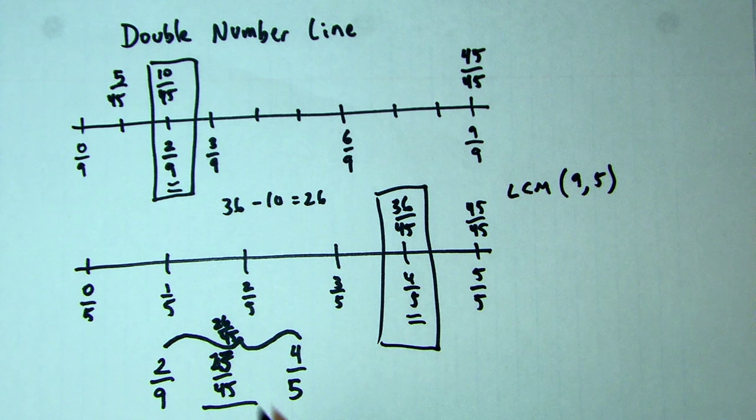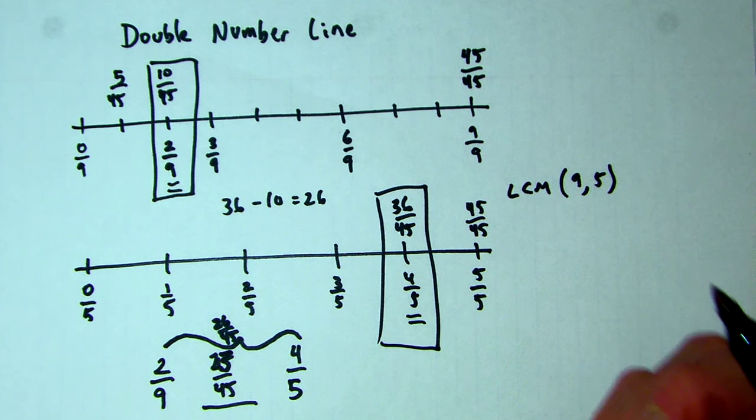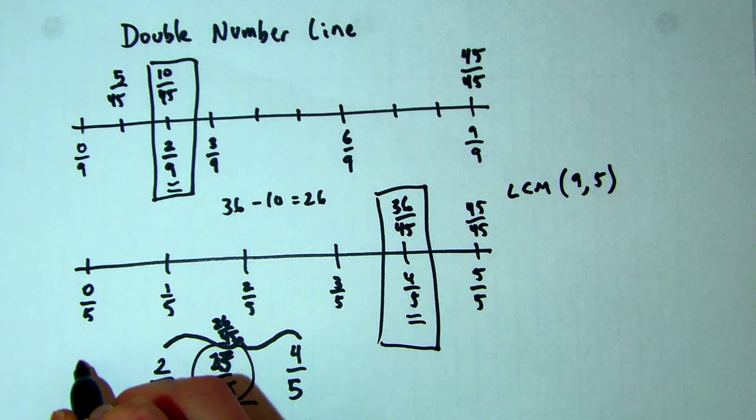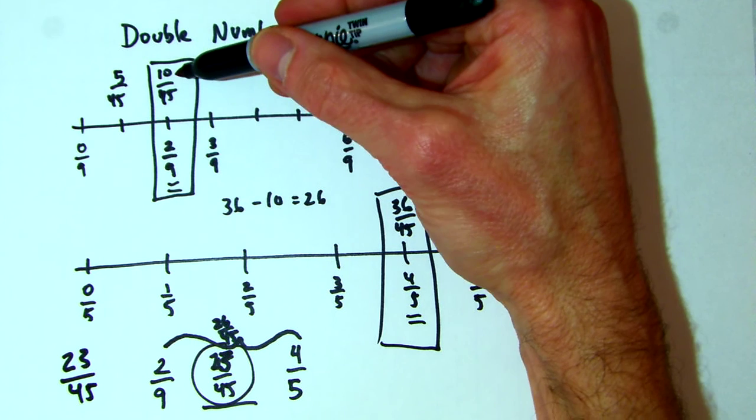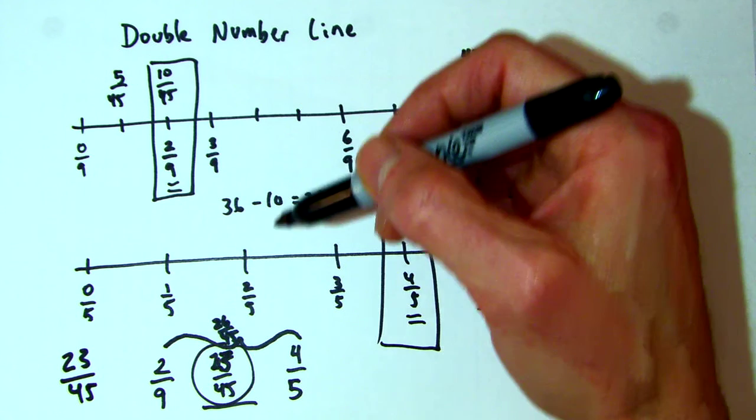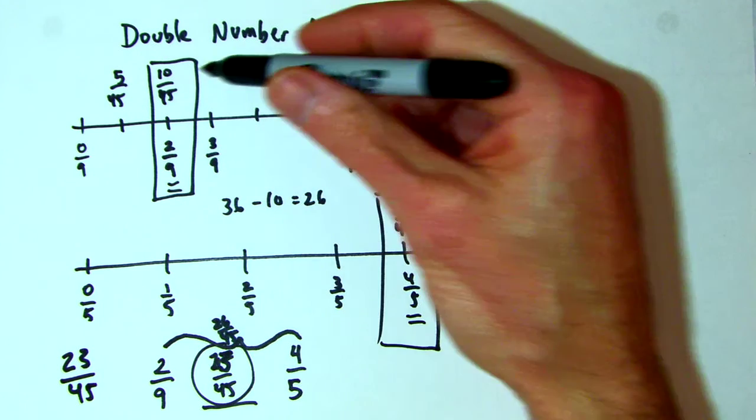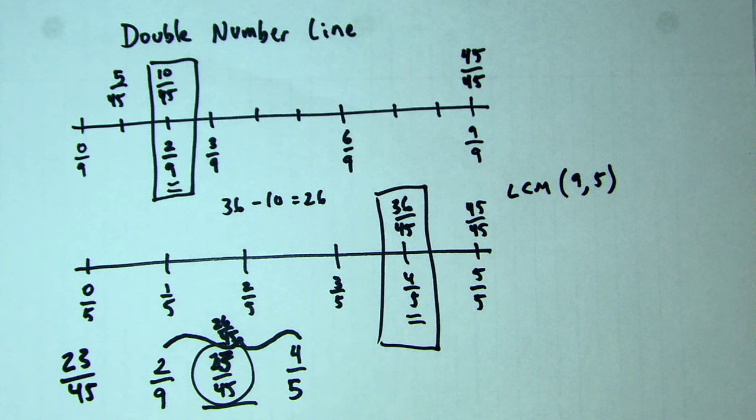It's a little unclear in the drawing, but this number here is 23/45 because it is 10/45 plus half the distance of 26/45 between these two, which is 10 plus 13, which is 23/45.